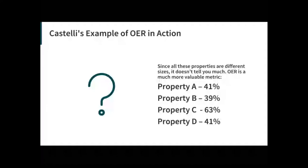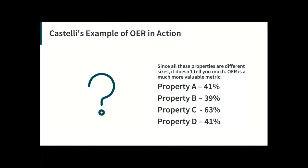If you look at the operating expense ratio — dividing a property's operating expense by its gross operating income — instead of the raw figures from the P&L, you discover the OERs for properties A, B, C, and D. This gives you actionable and digestible data. If the OER for three out of four properties is 39 to 41%, that's great. But why is property C at 63%? That's a cause for investigation — something's wrong.